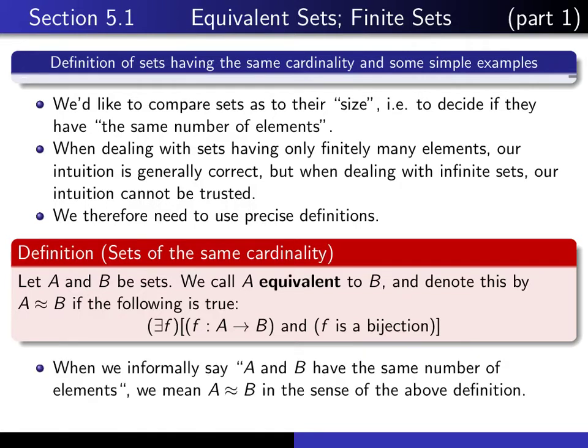So this is to replace the informal expression that A and B have the same number of elements. When we say A and B have the same number of elements, we mean A is equivalent to B in the sense of this definition here. The correct expression to use is A and B have the same cardinality. The expression that A is equivalent to B is just something that our textbook uses. Think of it more as a temporary definition. The more correct definition is to say that A and B have the same cardinality.